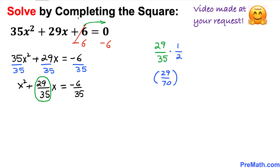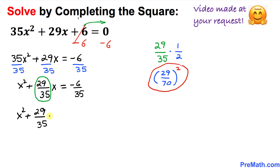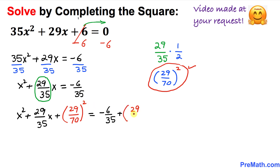The last step is to take whatever quantity we got and square it. We're going to add this squared number on both sides of the equation. So we write x² plus 29/35 x plus (29/70)² on the left, and negative 6/35 plus (29/70)² on the right.